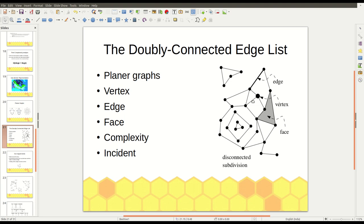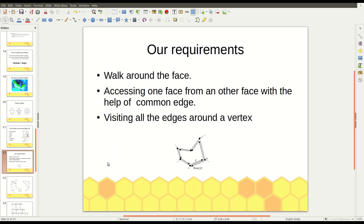So this is the terminology about doubly connected edge list. So what are our requirements by using this doubly connected edge list? What are the requirements about this data structure? Our requirements is, we want to walk around the face. This data structure should allow us to easily walk around the face. It should also provide the privilege of accessing one face from another face with the help of a common edge. And we also want to visit all the edges around the vertex.